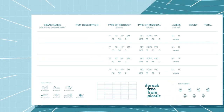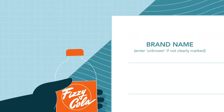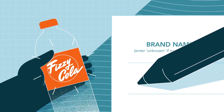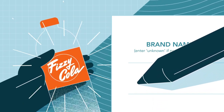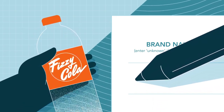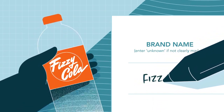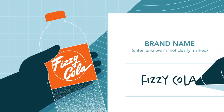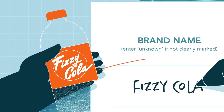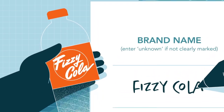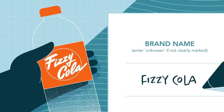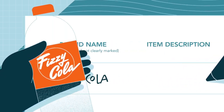Now you can start filling out your data card. First, write the name of the brand — this will be the most visible word printed on the item. Plastic waste items with unidentifiable brands should still be counted. You can simply write "unknown" in the column labeled Brand, and then record the other information required.